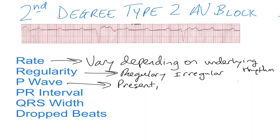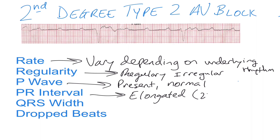P waves are going to be present and normal, but the PR interval is going to be elongated — greater than one large box, or 0.2 seconds. However, there is usually a 2-to-1, 3-to-1, sometimes 4-to-1 conduction ratio of P waves to QRS complexes.